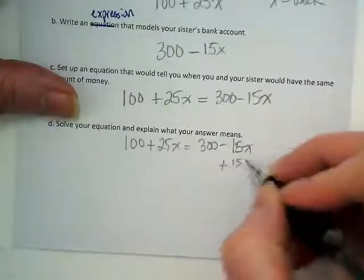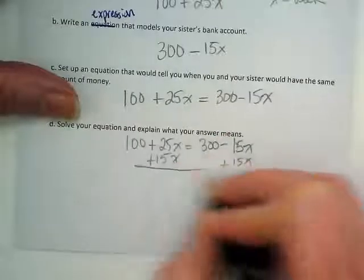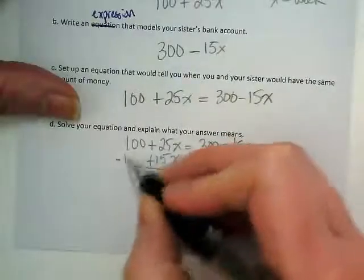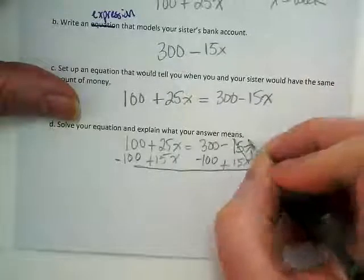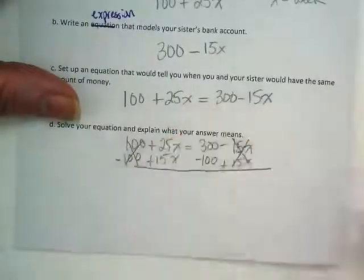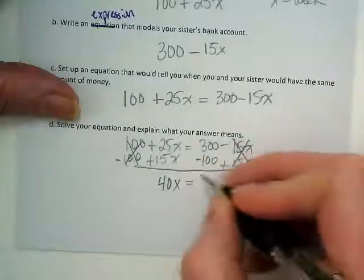I'm going to add this 15x to both sides. And as a shortcut, I'm going to subtract the 100 from both sides. That's going to zero out the x term here and zero out the 100 over here. That's getting me 40x is equal to 200.